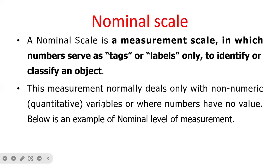Nominal scale is a measurement scale in which numbers, sources, tags, or labels only identify or classify an object. This measurement normally deals with non-numeric quantitative variables, where the numbers have no value below nominal levels of measurement. For example, male program, female pressure.